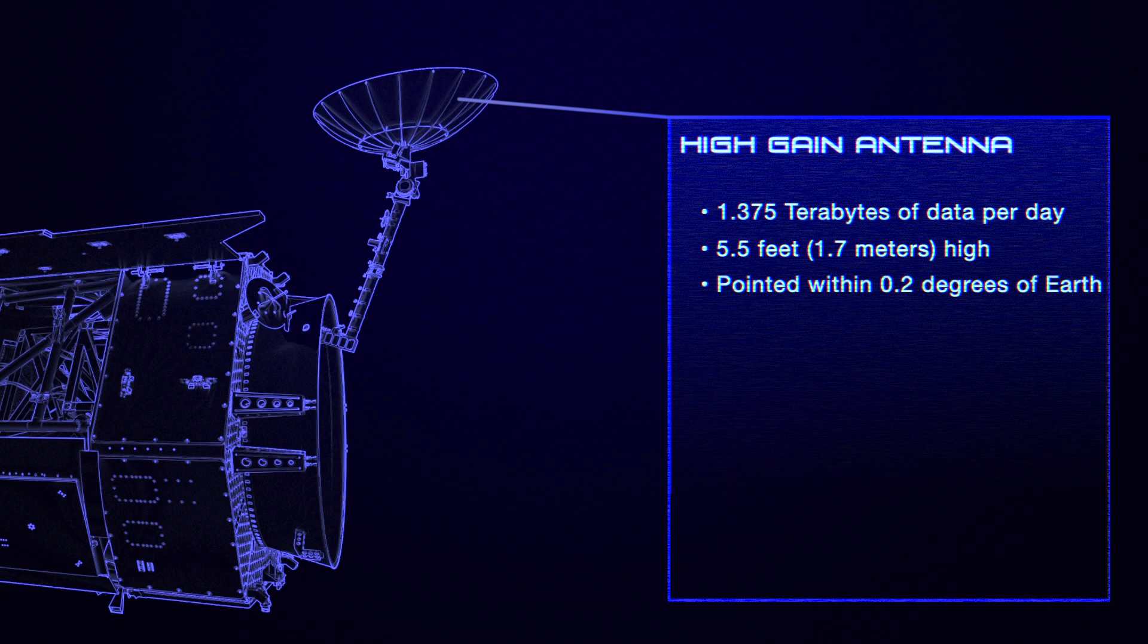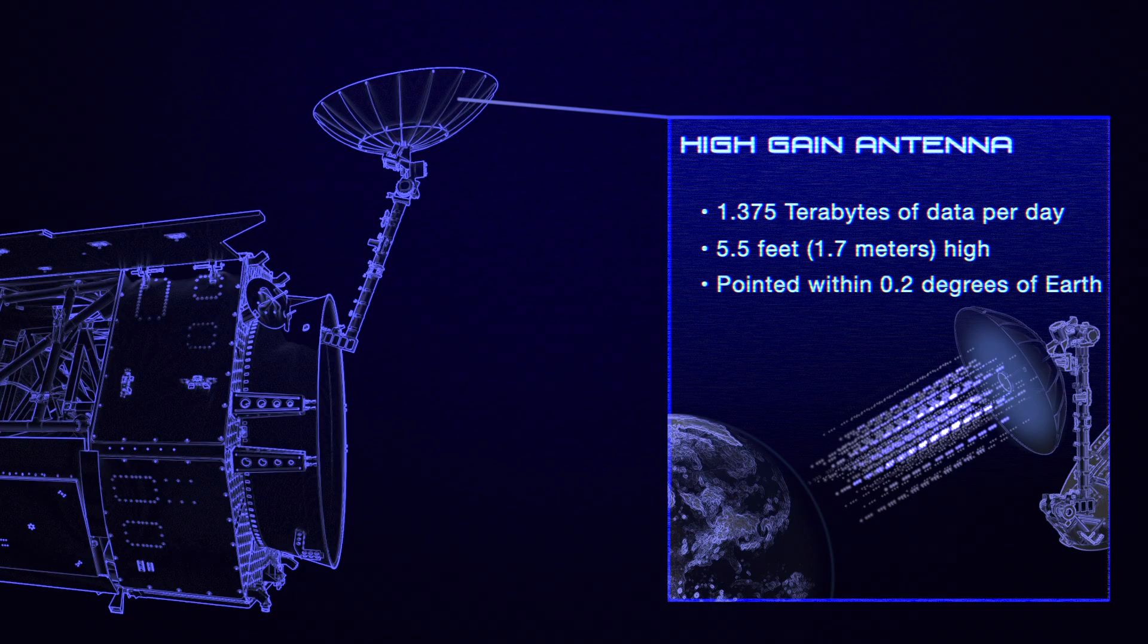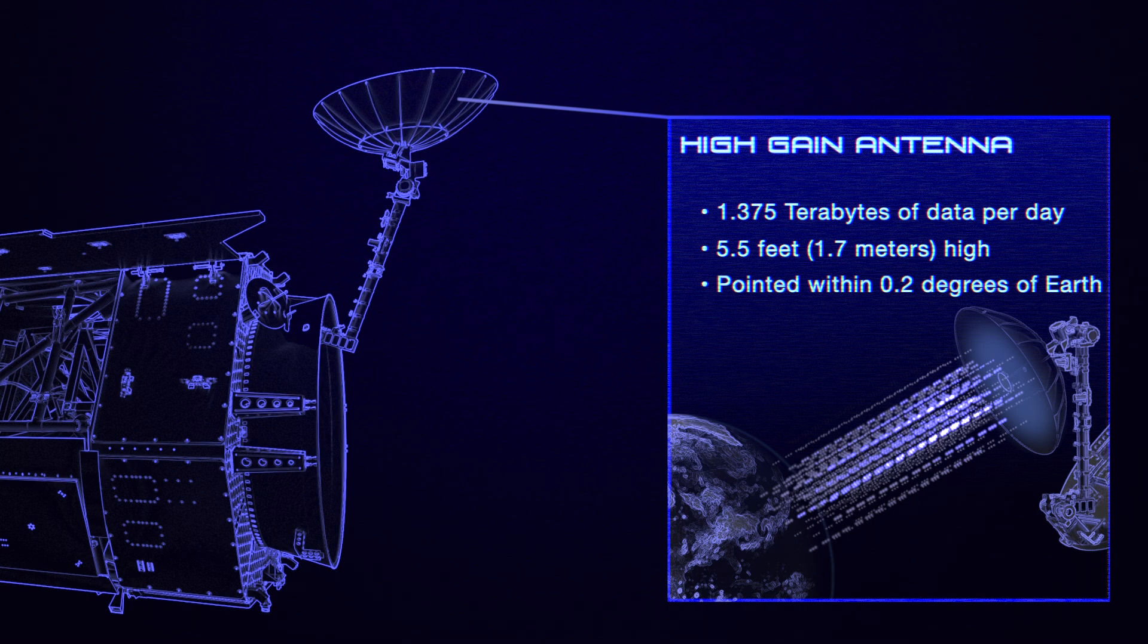At Roman's back is its primary means of communication with Earth, the high-gain antenna. This antenna will be responsible for sending nearly 1.4 terabytes of data to ground stations every day. That's the equivalent of 460 hours of streaming video.